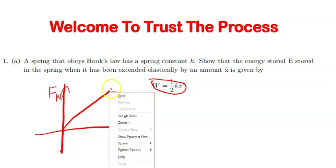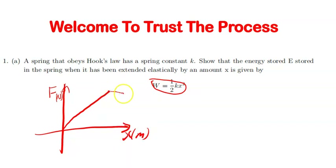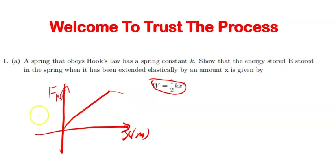Beyond the elastic limit, the spring won't obey Hooke's Law. You can apply a greater force, but you won't get a proportional change in extension — it will no longer be a straight line. The relationship between force and extension or compression won't be direct, as you can see.